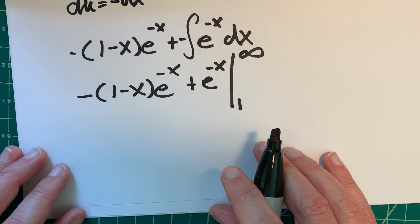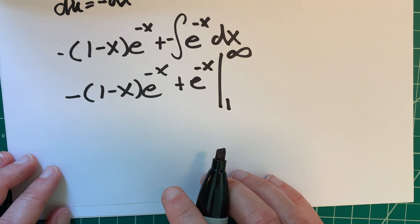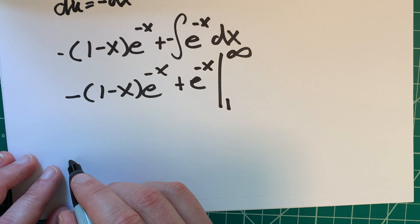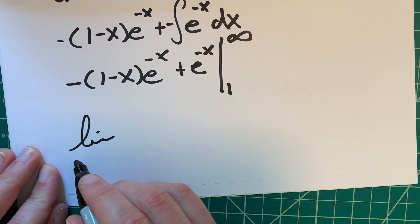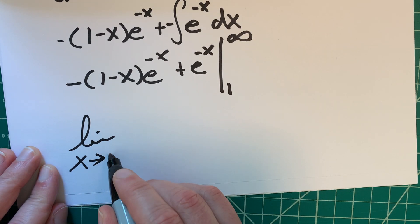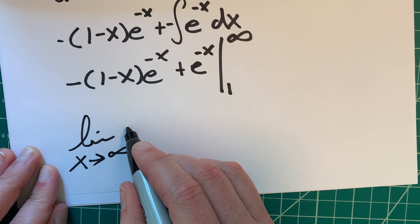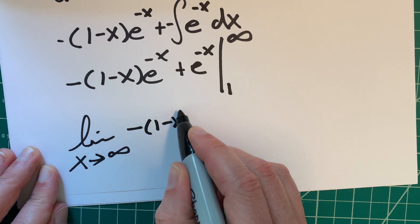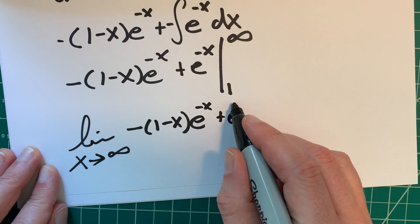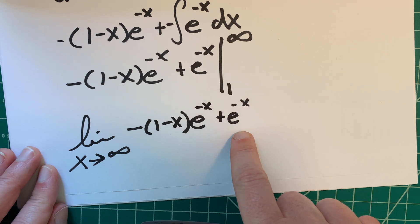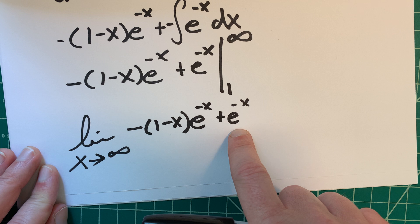Taking the limit approaching infinity, well, is this going to be hard or not? I guess we'll see. So that's the limit as x approaches infinity with negative 1 minus x e to the negative x plus e to the negative x. So this part here, I believe it's going to go to 0.